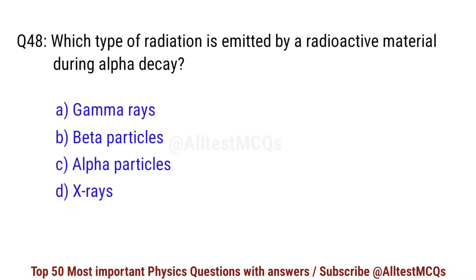Question number 48. Which type of radiation is emitted by a radioactive material during alpha decay? Correct option is C. Alpha particles.